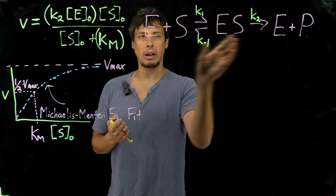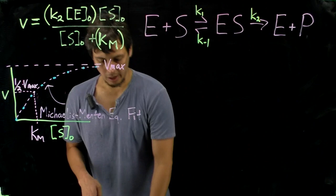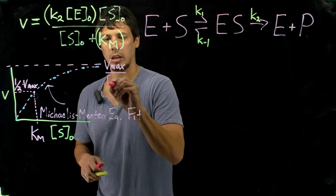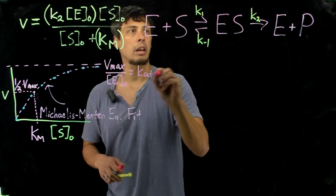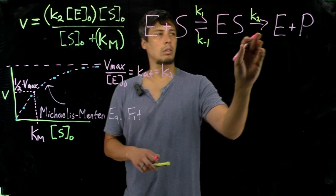So all of the enzyme is converted to enzyme substrate complex. And Vmax is related to Vmax over E0 equals Kcat, which in this case Kcat is equal to K2.